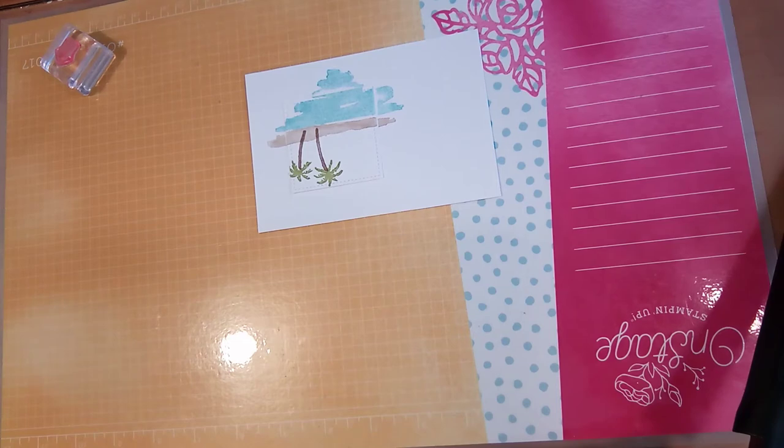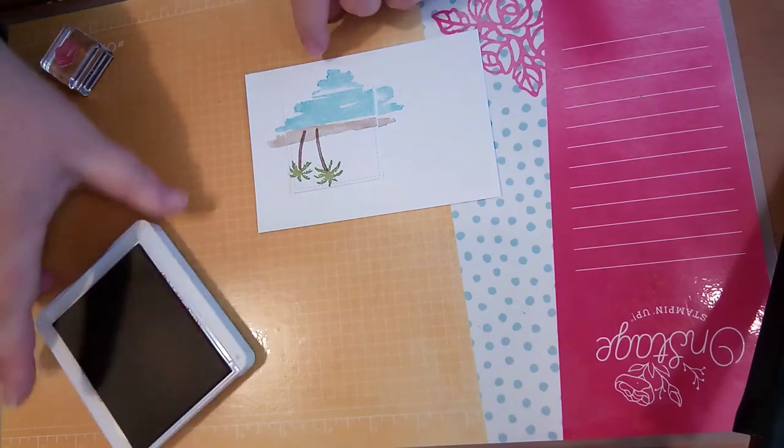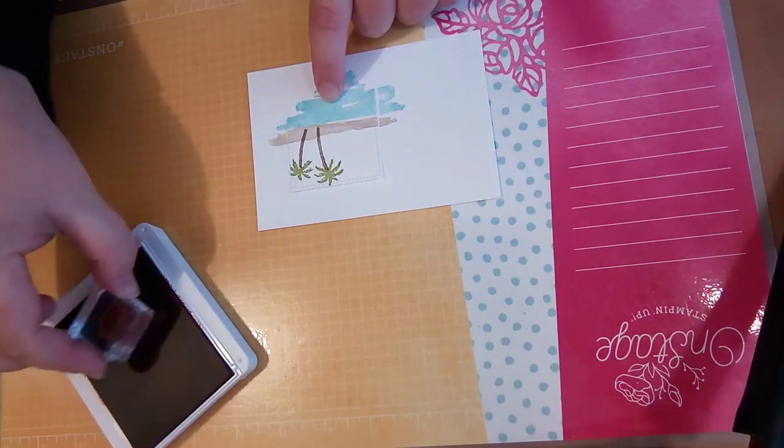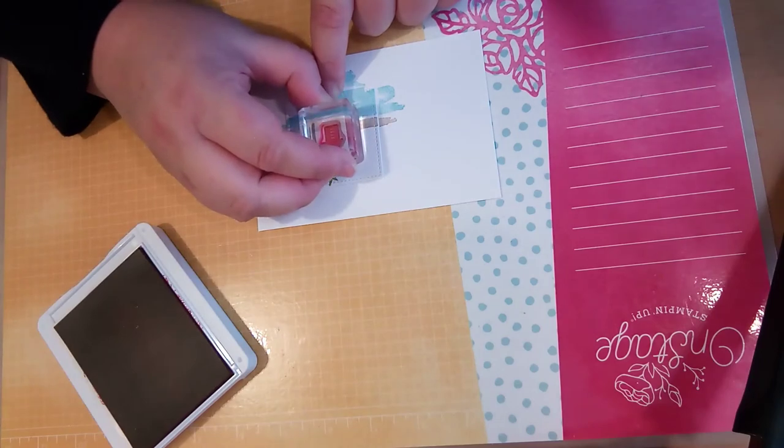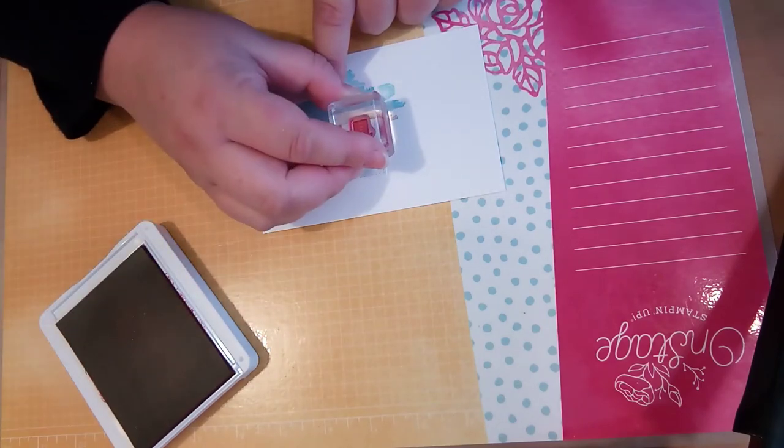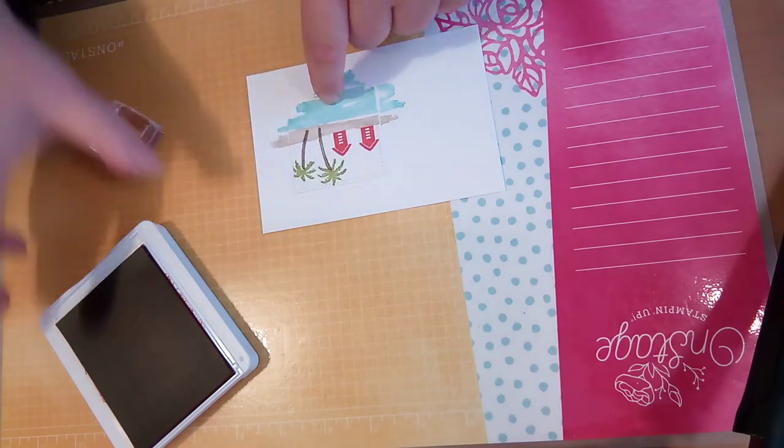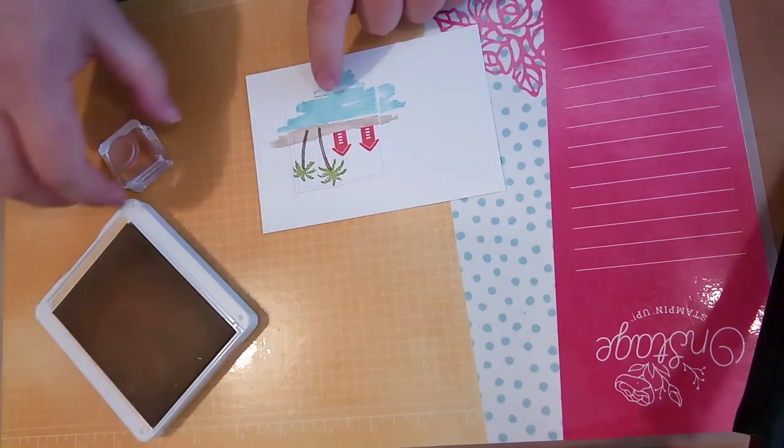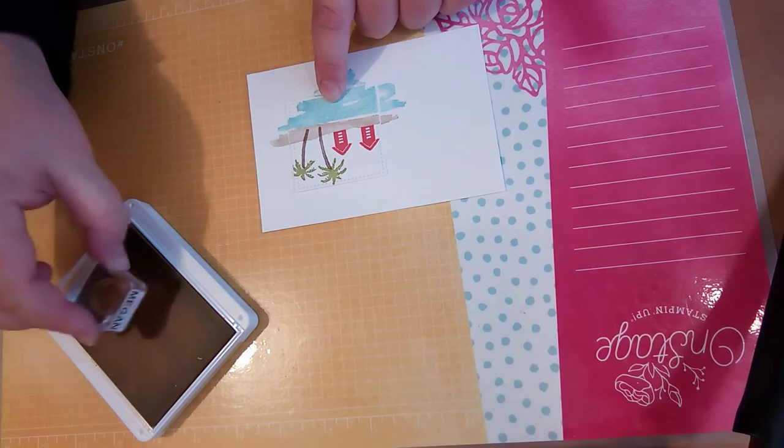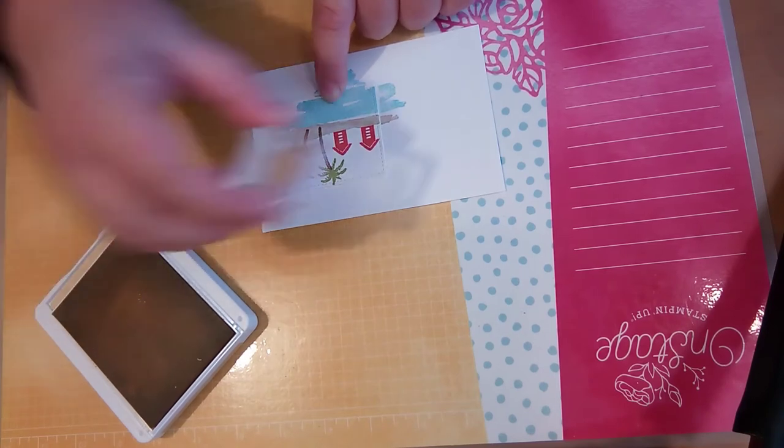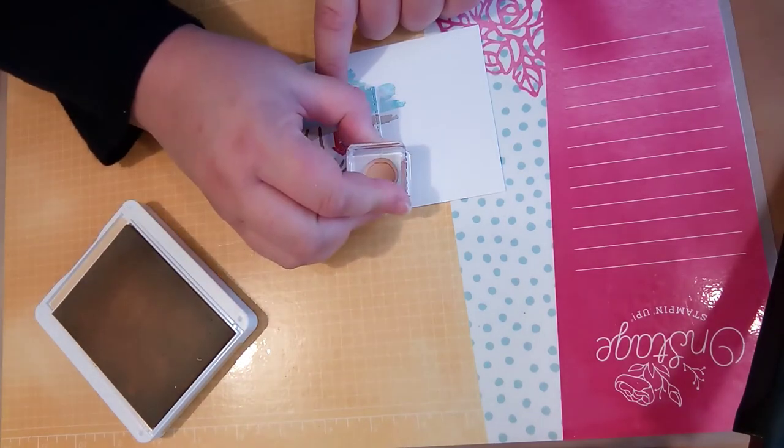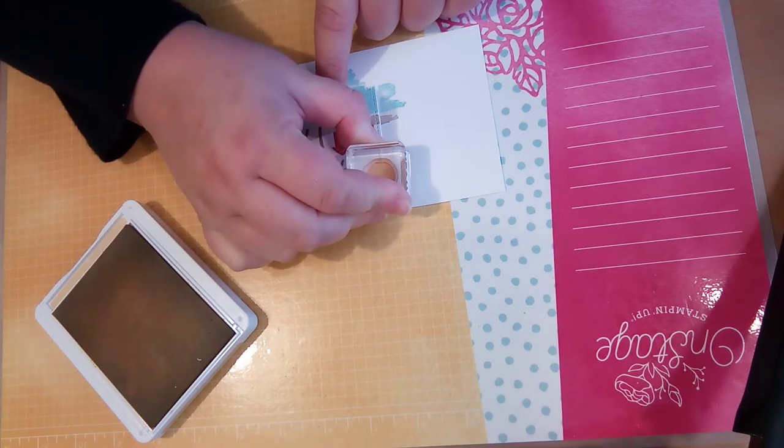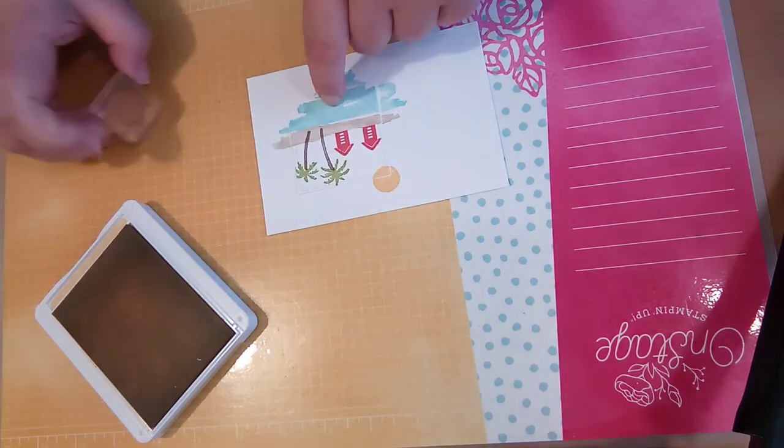Now I have got Daffodil Delight for the little hat, looks like a little beach hat. So I will just add two of those in there sitting on the sand I think. And last but not least I have got Soft Suede for the sand. I don't know what it is about filming but I turn on the camera and suddenly I forget how to speak. It's just a bit funny.